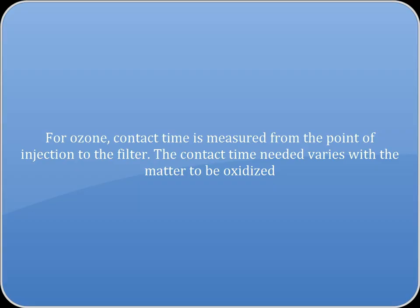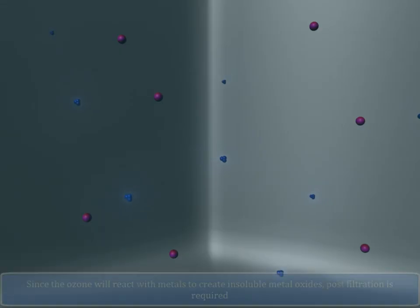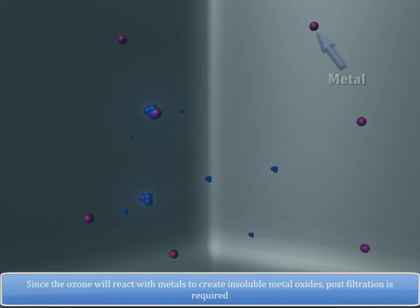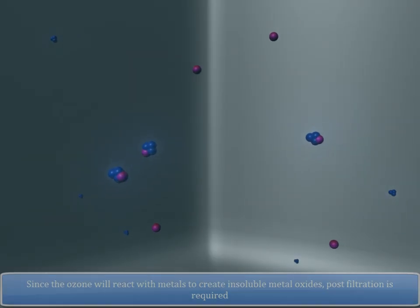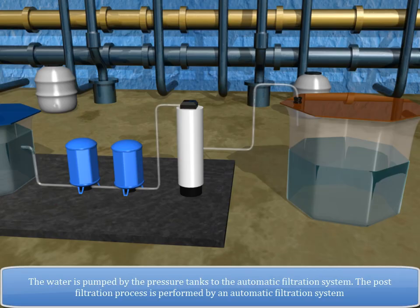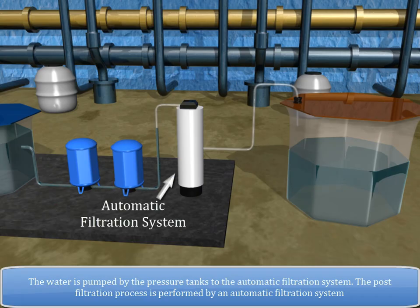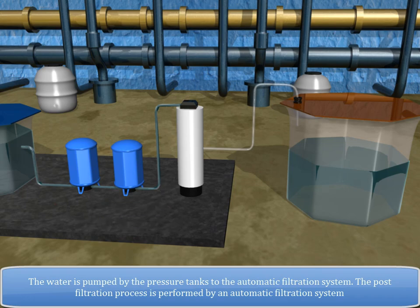The contact time needed varies with the matter to be oxidized. Since the ozone will react with the metals to create insoluble metal oxides, post-filtration is required. The water is pumped by the pressure tanks to the automatic filtration system. The post-filtration process is performed by an automatic filtration system.